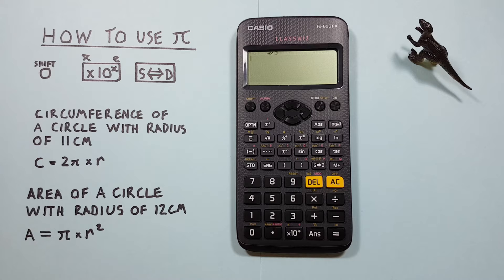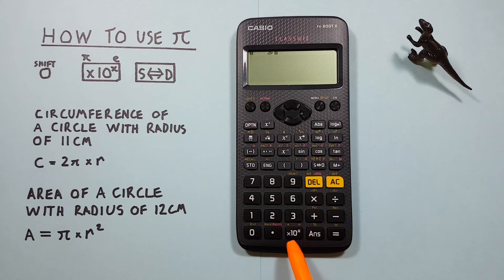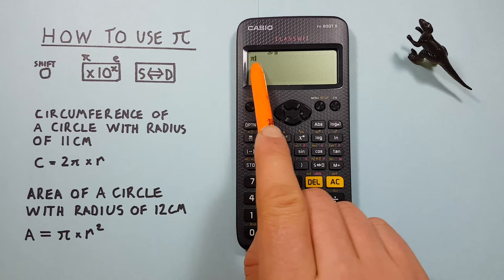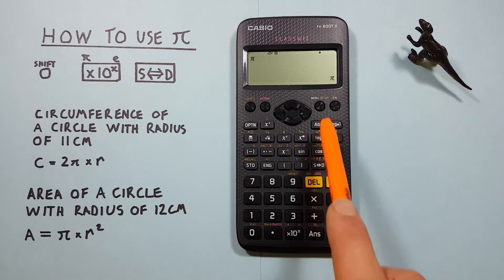If we just want to enter PI on our calculator it's the shift function of the times 10 to the power of X key. So to get it there we press shift and then that times 10 to the power of X key. We see the PI symbol appear on our screen. And if we press equals, there we go.